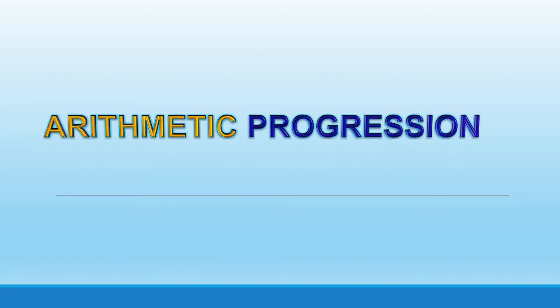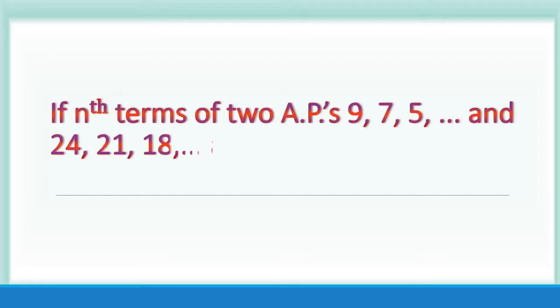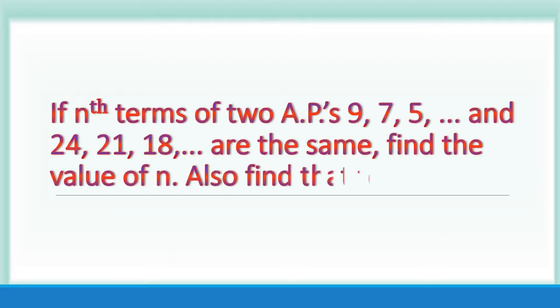Arithmetic Progression problem: If the Nth terms of two APs — 9, 7, 5, etc. and 24, 21, 18, etc. — are the same, find the value of N. Also find that term.